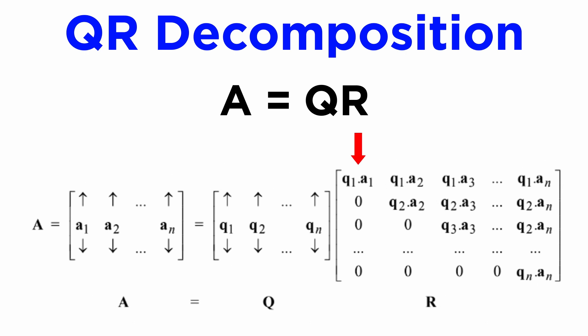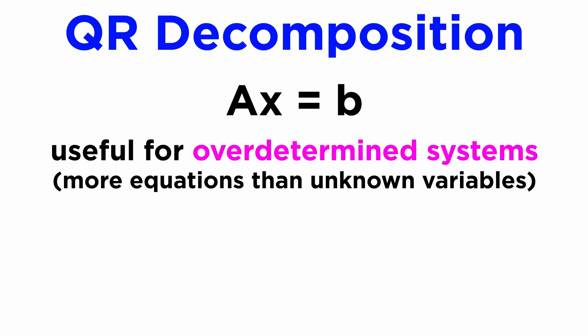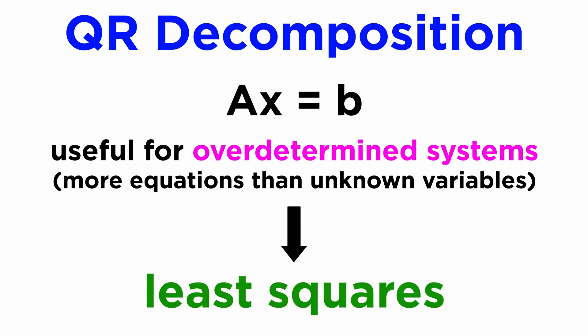For the i-th column of R, we take the i-th column of A and dot it with each column of Q to form the row entries down to the diagonal. Like the LU decomposition, the QR decomposition can be used to solve systems of equations of the form AX equals B, but the QR decomposition has another advantage, as QR can be used to solve over-determined systems, meaning systems with more equations than unknown variables, in an algorithm called least squares.